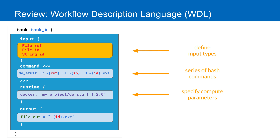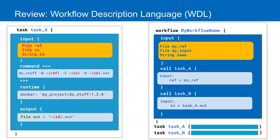It has a runtime section where you can specify computational parameters. In the case of running in the cloud on Terra, we're going to call a Docker that we can use to set up our virtual machine. Lastly, it has an output section where we write our transformed data to an output variable. You can imagine having multiple tasks to complete for your end-to-end analysis, and to string those together we use a Workflow Definition. On the right, you can see that the workflow definition defines inputs similar to a task, calls tasks where we can use those workflow inputs to set individual task inputs, and we can also declare workflow outputs.